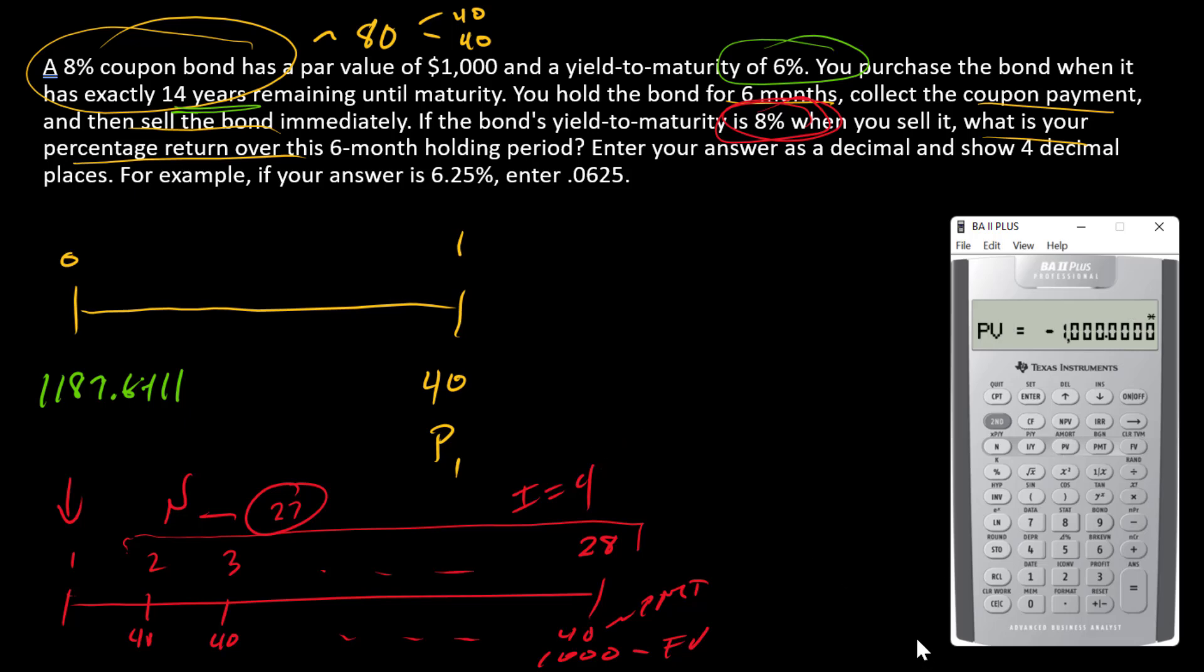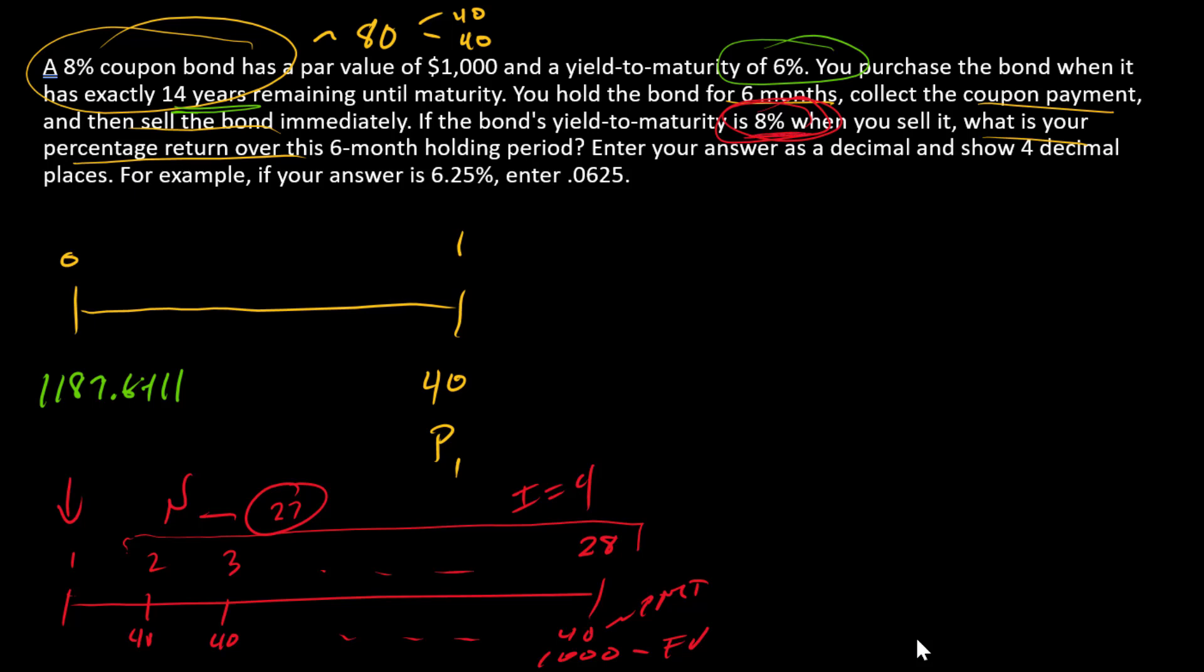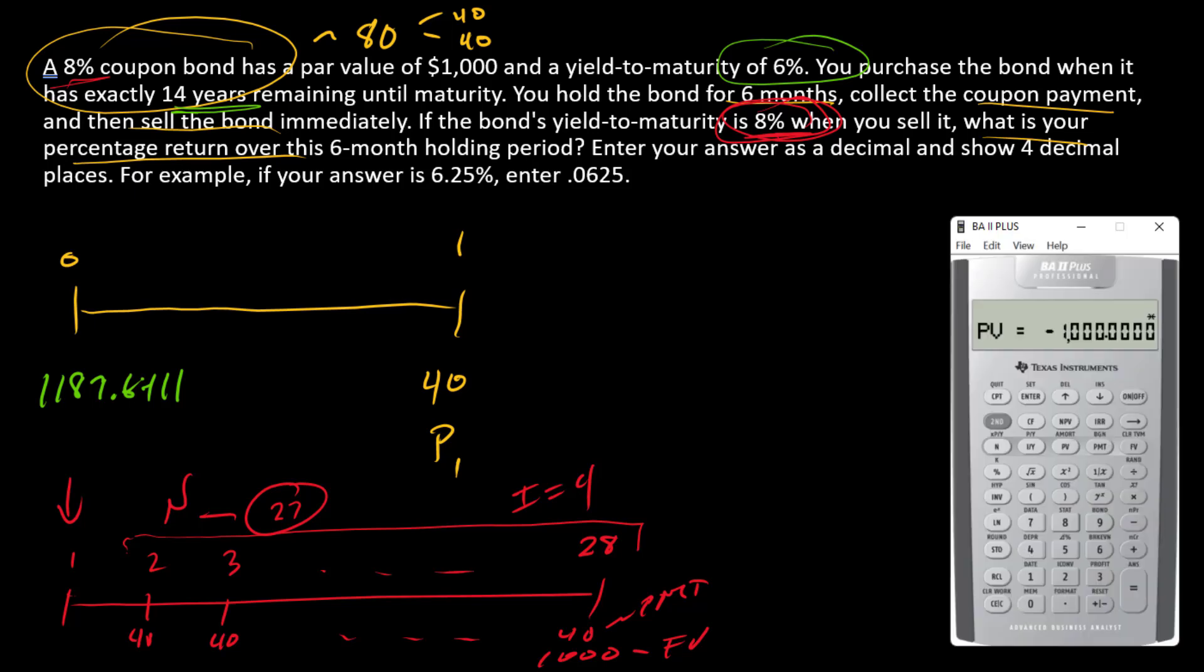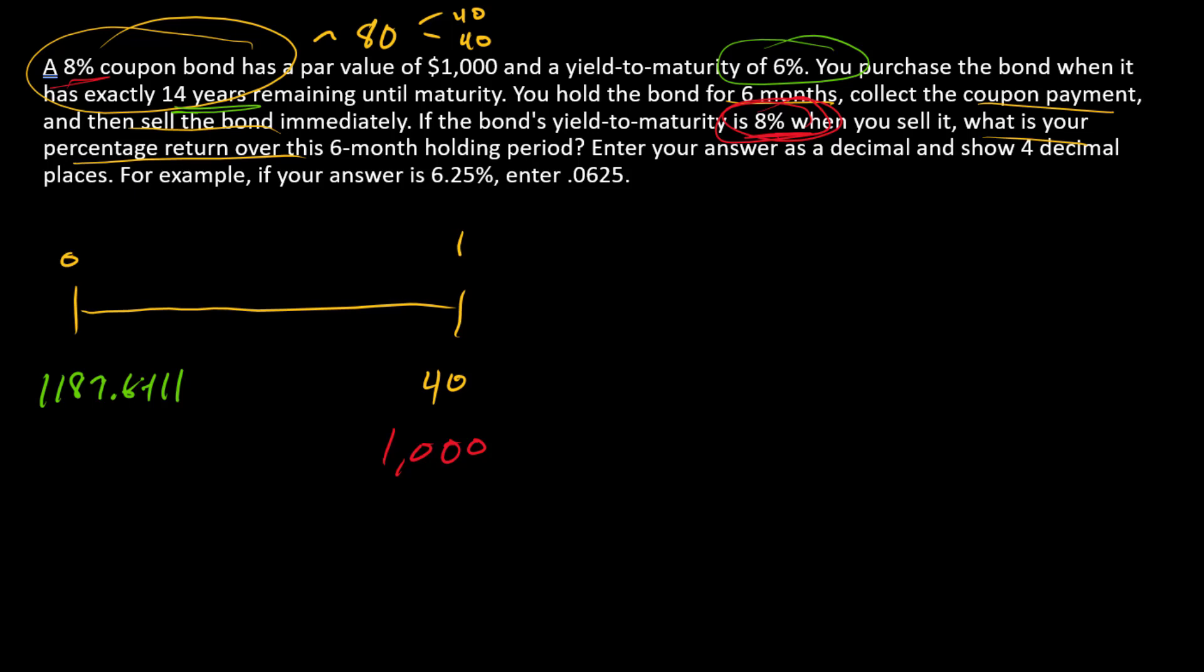Now did I need to calculate this number? I really didn't, because if I would have clued myself into this relationship here—8% and 8%—I would have known this bond is now selling for par. But I calculated again just to go through the motions and prove that. Now all I've got to do, since I'm calculating the percentage return, is I just need to find the discount rate that sets the present value of all these inflows equal to the price.